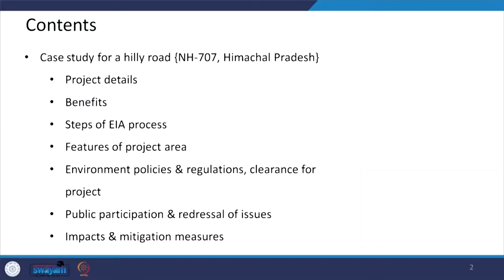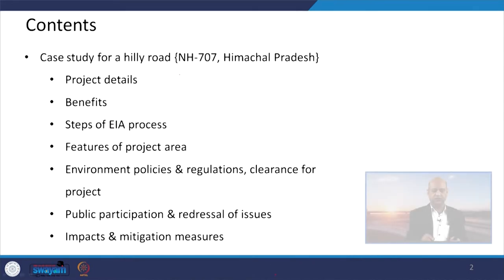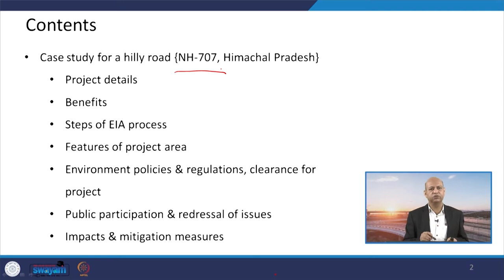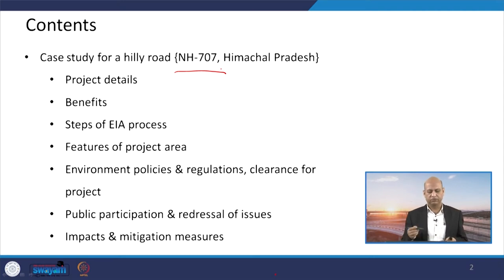All four components — air, water, road, and railway — will be addressed properly through these case studies. In this case study of hilly road, we will discuss the EIA of National Highway 707, which is in Himachal Pradesh, one state of India.